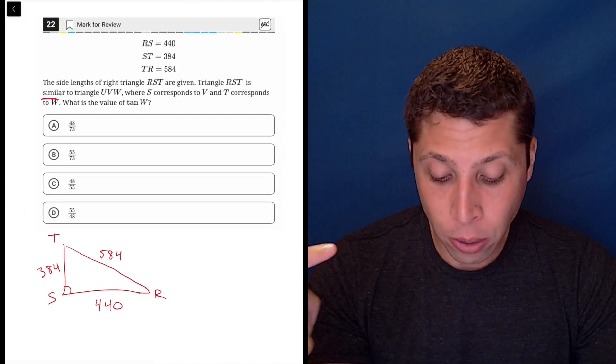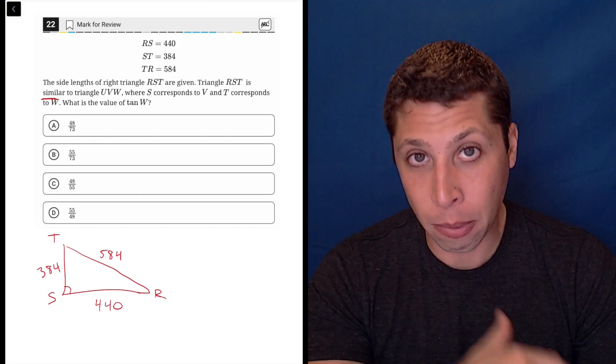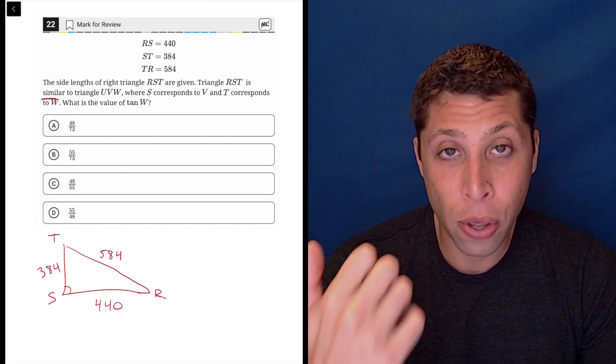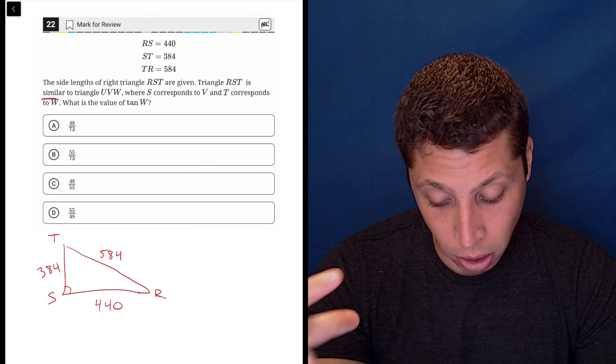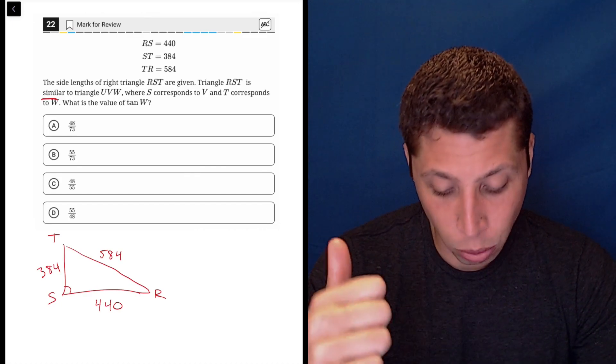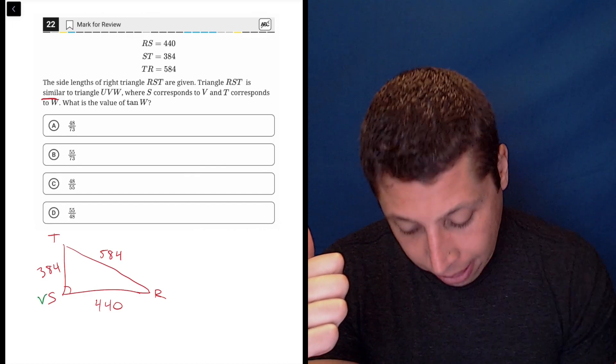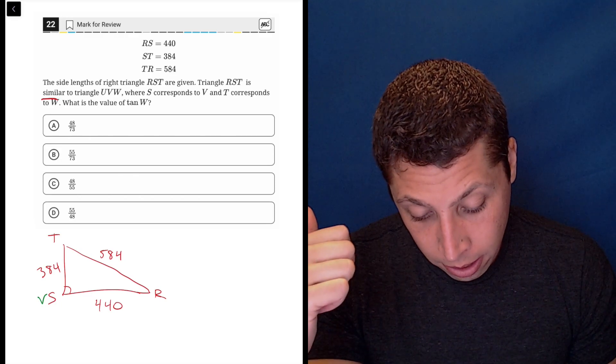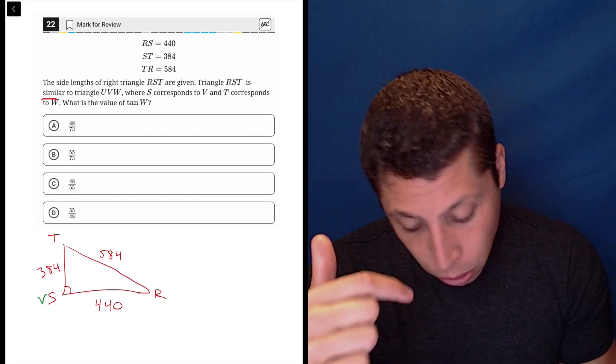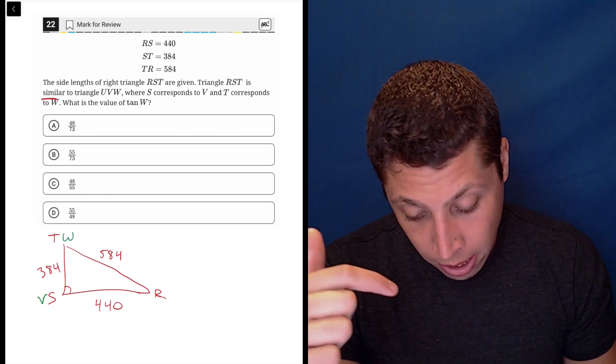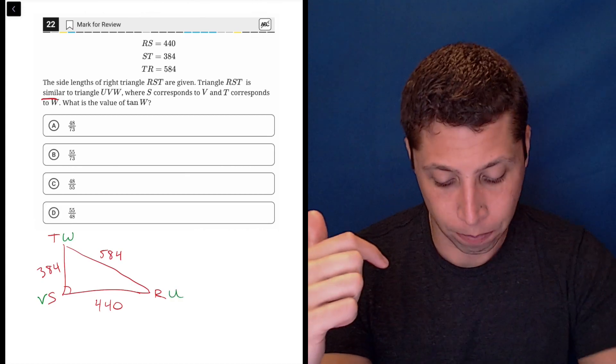From here, we might want to also label these points with the U, the V, and the W, right? So they tell us S corresponds to V, so I'm going to put that there. T corresponds to W, so that's here. And then that means this must be U, okay?